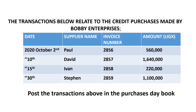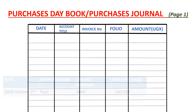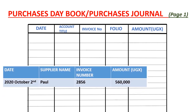We'll get started and look at the first transaction. The first transaction says that on October 2nd, 2020, we had a supplier called Paul who gave us goods worth $560,000. So we go ahead on our purchases day book, post the date, and the account title is Paul, our supplier. The invoice number is 2856 and the amount of goods he gave us were worth $560,000.